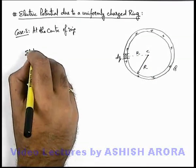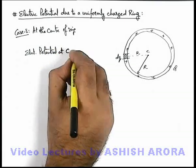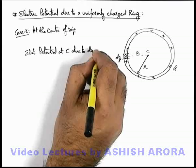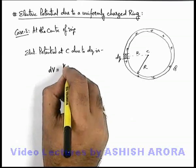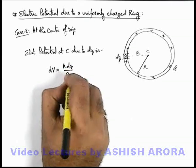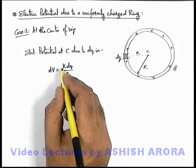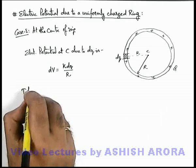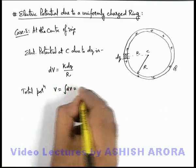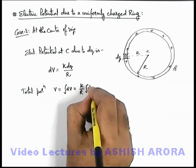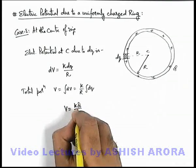We can directly write the electric potential at C due to dq. Using the result of a point charge, the potential at C is dV, which can be written as k·dq/r. For all elements on the circumference, r is constant and k is constant, so total potential V equals the integration of dV, which is k/r times the integration of dq. Integrating the total charge, we get V = kq/r.